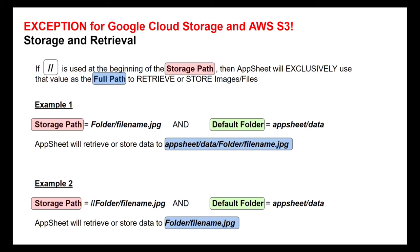Here's example one: a normal storage path with no double forward slashes. With a default folder of AppSheet slash data, the full path result is AppSheet slash data slash folder slash filename dot JPEG — the expected behavior. Example two is the scenario with double forward slashes in the storage path, while still having a default folder of AppSheet slash data. In this case, AppSheet will go search or store data at slash filename dot JPEG, completely ignoring the AppSheet slash data default folder.